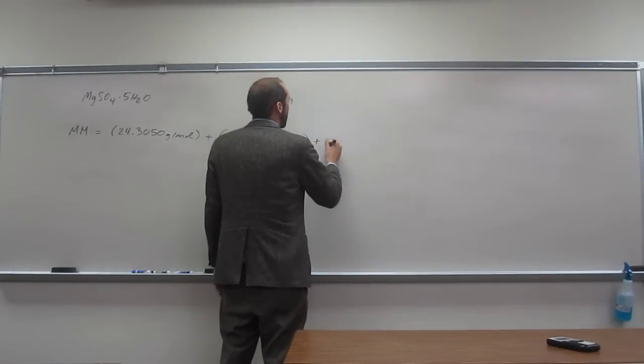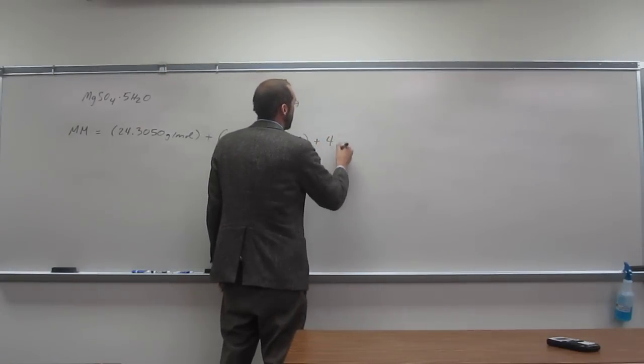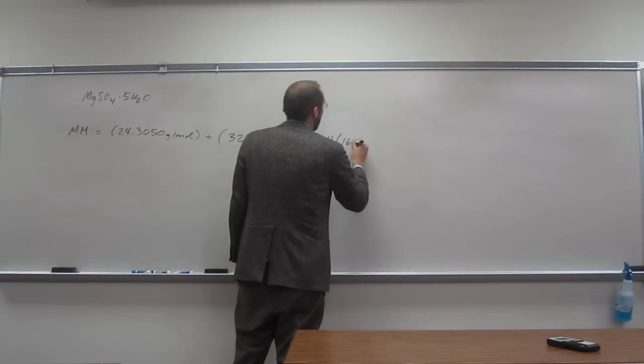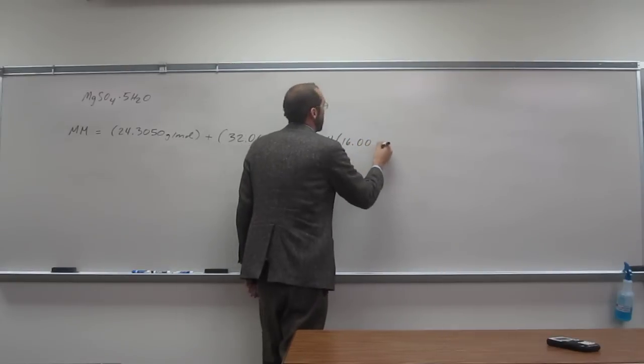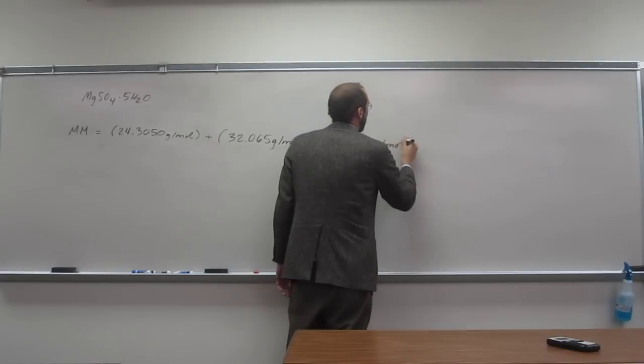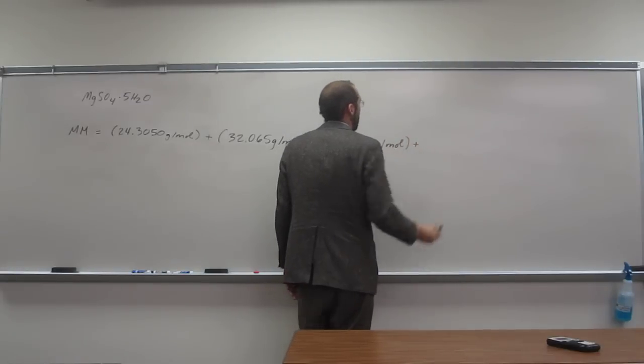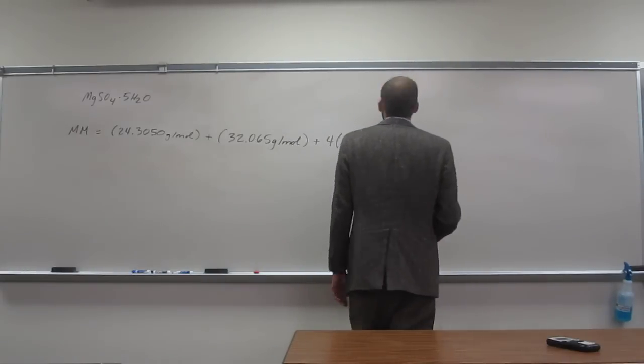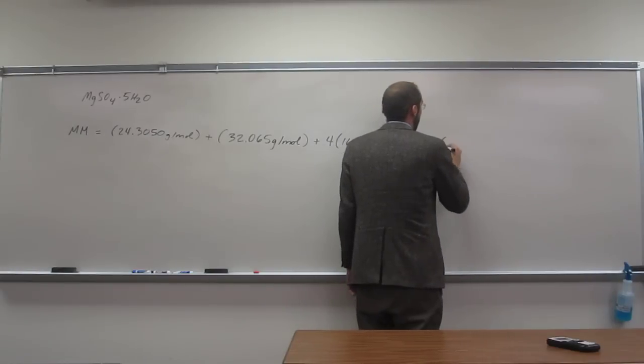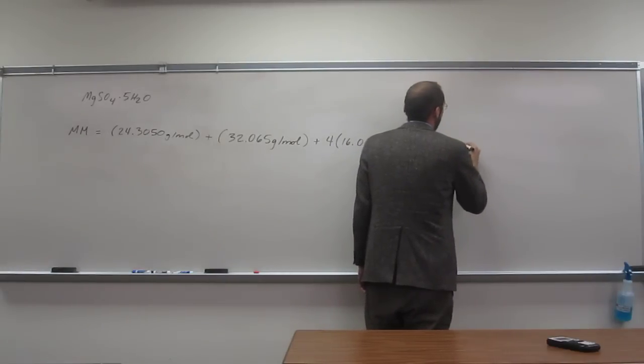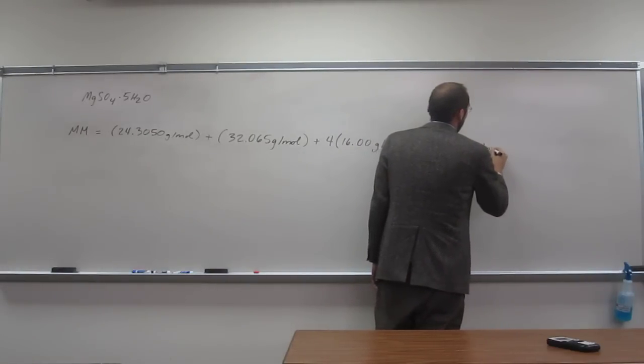So, how many oxygens in the sulfate part? Four. So four times 16.00. Plus five waters, 18.02 grams per mole.